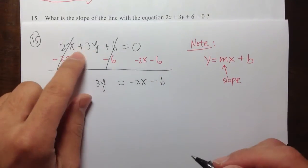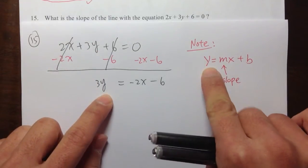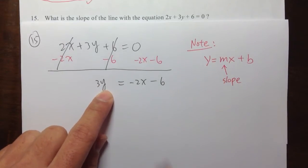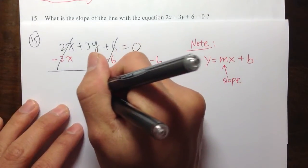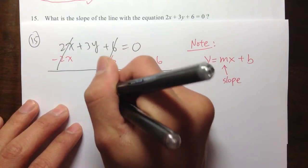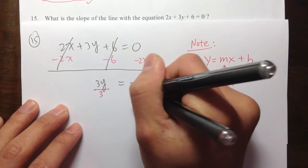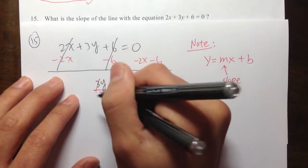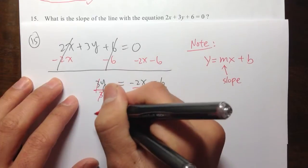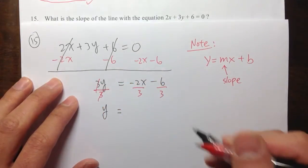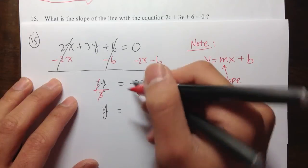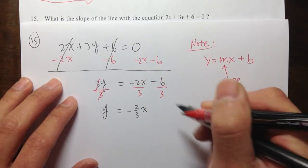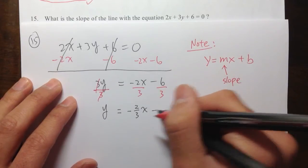So I did isolate the 3y part. Now I want to isolate the y. I want to have the y by itself. I don't want the 3 multiplied by the y. So what we are going to do is divide everything by 3. Divide everything by 3. 3 divided by 3, they cancel. So yes, we will isolate the y. And that's equal to... Let me put the numbers together. Let me put this as negative 2 over 3, and then x. Minus 6 over 3, which is minus 2.